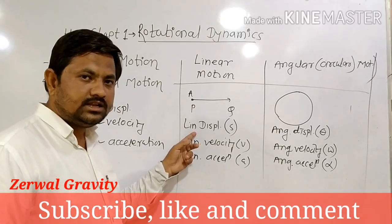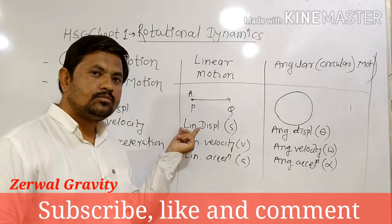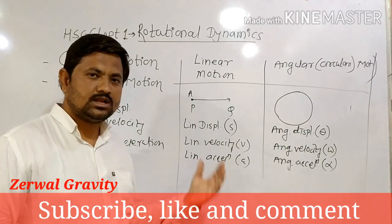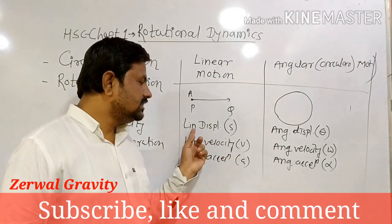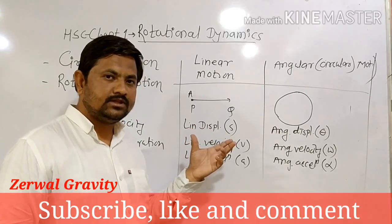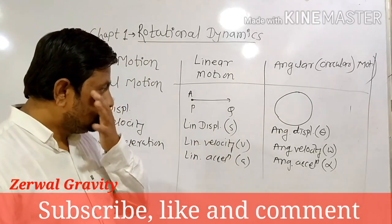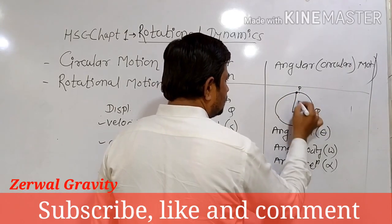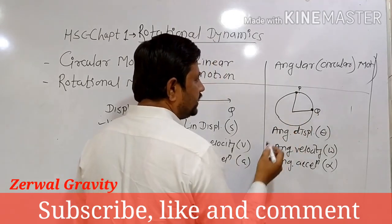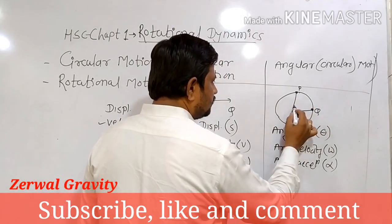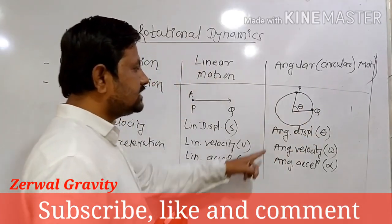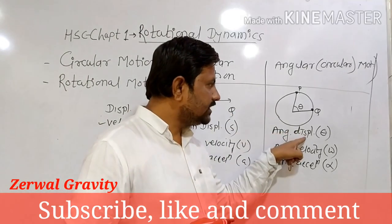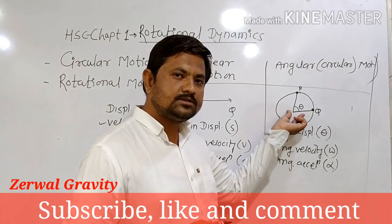What is linear displacement? It has the same definition as displacement — when a body displaces in a straight line manner from one point to another, the distance travelled is called linear displacement, or the shortest straight-line path between the initial and final point. What is angular displacement? When a body moves from point P to Q along a circular path, this displacement is measured with the help of an angle, and that angle is called angular displacement. Linear displacement is measured in meters or centimeters, but angular displacement is measured in terms of angle, and its unit is radian.